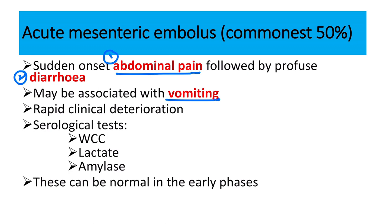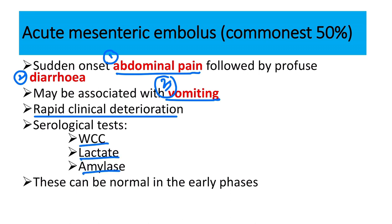When all three features — abdominal pain, diarrhea, and vomiting — are present, the diagnosis is acute mesenteric embolus. Rapid clinical deterioration occurs and the abdominal pain is so severe that it is usually not relieved by traditional painkillers. Serological tests include white blood cell count, lactate, and amylase, which can be normal in early phases.